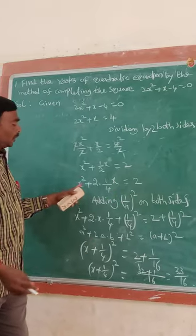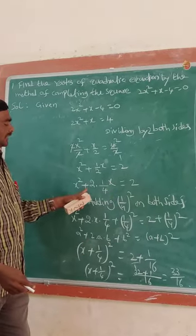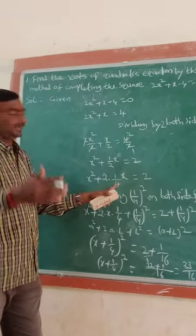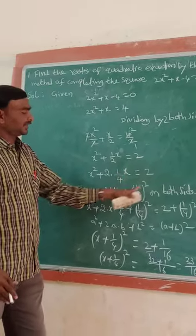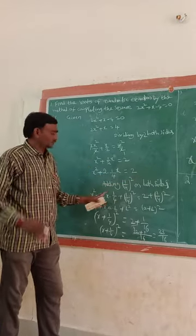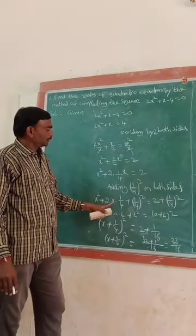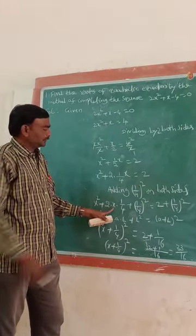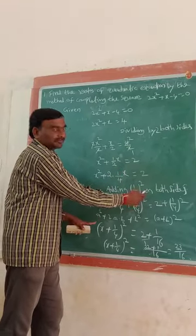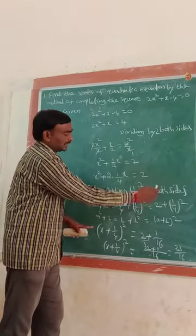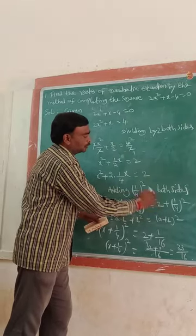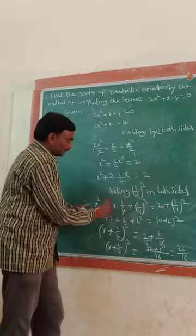We do this because we can apply the identity a² + 2ab + b². Here b equals 1/4, so b² means (1/4)² whole square. Adding (1/4)² on both sides, we get x² + 2 × x × (1/4) + (1/4)² = 2 + (1/4)².